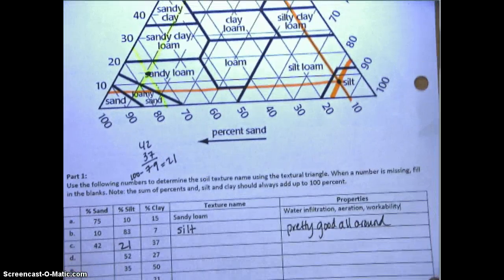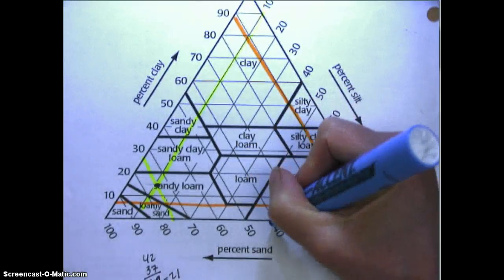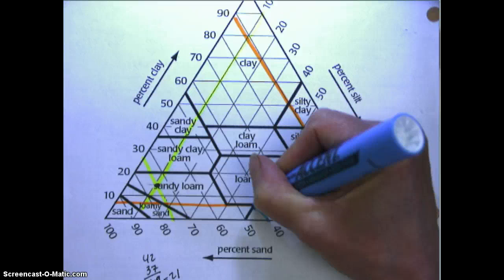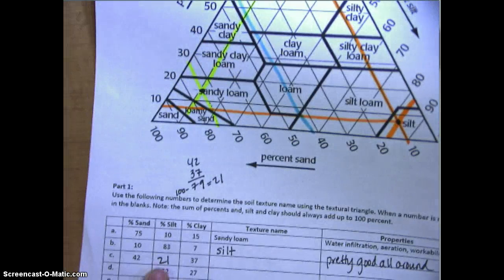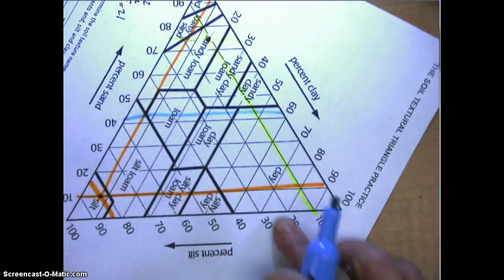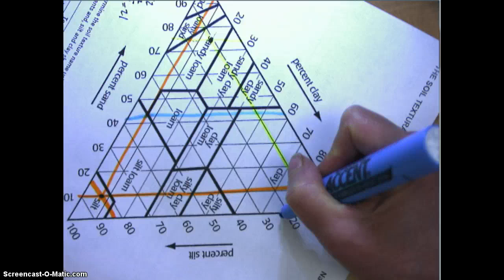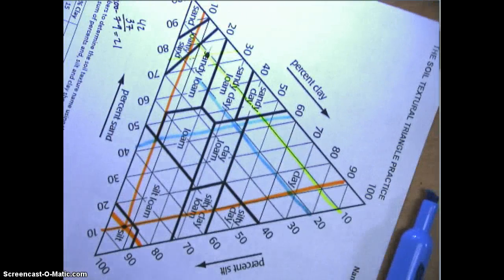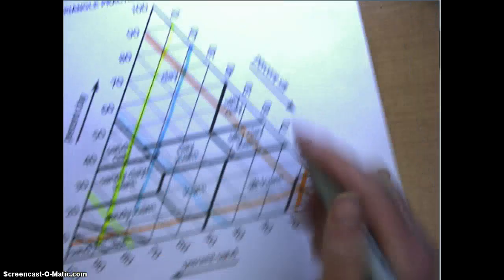42 plus 37 is 79, so 100% minus 79 is 21% silt. Let's start with the sand - 42% sand, and I might use a blue one this time. Here's 40, 50, and remember I'm always looking at the line on the left. So 42 is going to be fairly close somewhere along that line. 21% silt, so I'm going to go to 20. There's 20, there's 30, so 21 is probably going to be really close to 20.